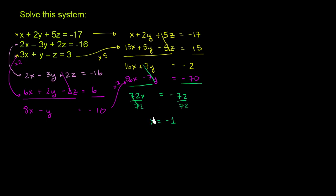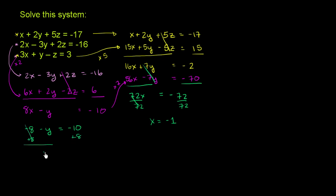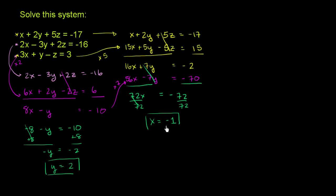Now we substitute back to find y and z. Going back to 8x minus y equals negative 10: if x equals negative 1, then 8 times negative 1 is negative 8, so negative 8 minus y equals negative 10. Adding 8 to both sides gives negative y equals negative 2, or multiplying both sides by negative 1, y equals 2.